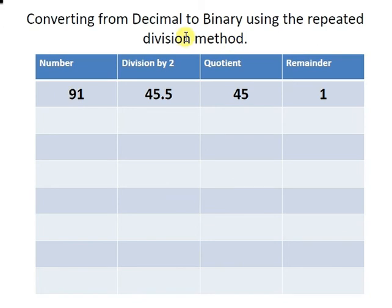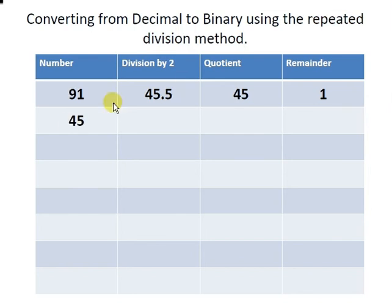What we're going to do is repeat this division — that's why we call this the repeated division method. We're going to constantly re-divide numbers. The number we're going to bring down for the next phase is the quotient, so we're going to bring down 45 and use it as the number for the next phase.